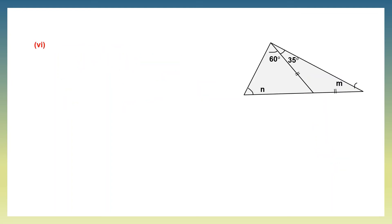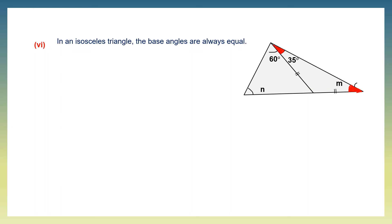Question 6. Here we need to find angle n and angle m. In an isosceles triangle the base angles are always equal. The base angles shaded in red are angles m and 35 degrees. So angle m equals 35 degrees.